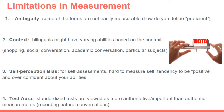Let's talk about some of the limitations of the types of bilingual measurement we've discussed. The first limitation is ambiguity. Some of the terms we've mentioned are not easily measurable. For example, how do you define someone as proficient? Is it someone who can hold casual conversations, or someone who can write effectively using academic vocabulary? The term 'proficient' often also differs based on the statewide definition.